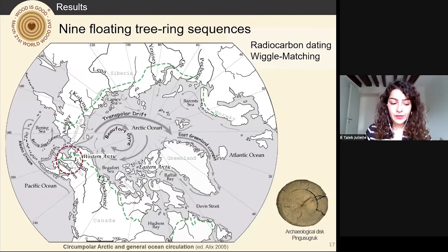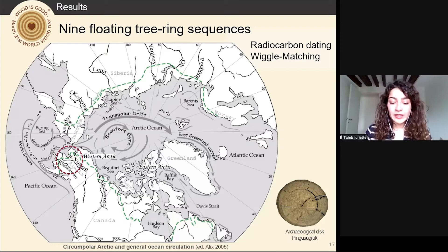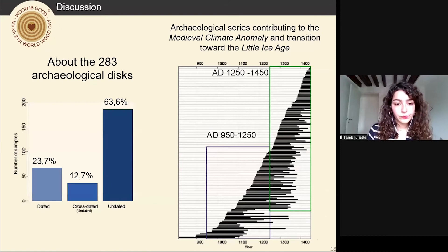Nine floating tree-ring sequences did not cross-date with the Kobuk River master chronology and remain undated. We know from Giddings and previous work on the origin of driftwood in Alaska that a large part of it comes from interior Alaska by way of the Yukon River into northwest Alaska. Existing tree-ring master sequences from interior Alaska only have a time depth of 200 to 300 years, showing varying signatures along a longitudinal gradient. This most likely explains why many of the floating chronologies remain undated. Some of these disks are subject to ongoing radiocarbon dating, and a wiggle-matching approach will place them in calendar time.